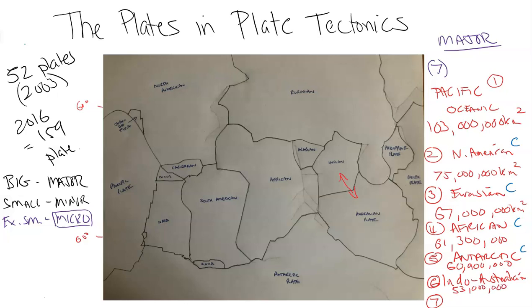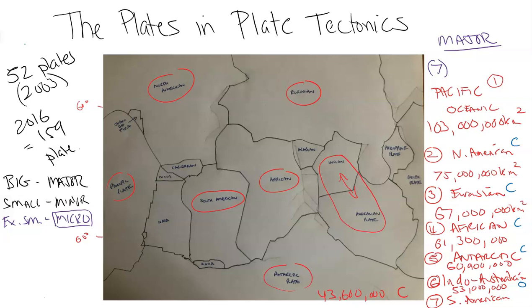Last but not least, we have the South American plate at 43.6 million square kilometers, again mostly a continental plate. So the majority of these major plates are continental, with the outlier being the Indo-Australian — over half ocean — and obviously the Pacific, which is very large in oceanic terms. The seven major plates are: Pacific, North American, Eurasian, African, Antarctic, Indo-Australian, and South American.